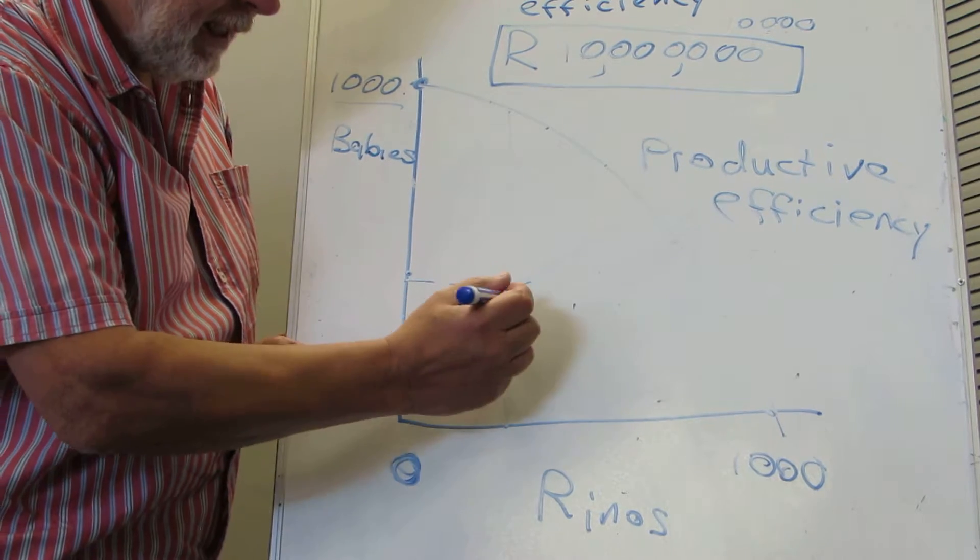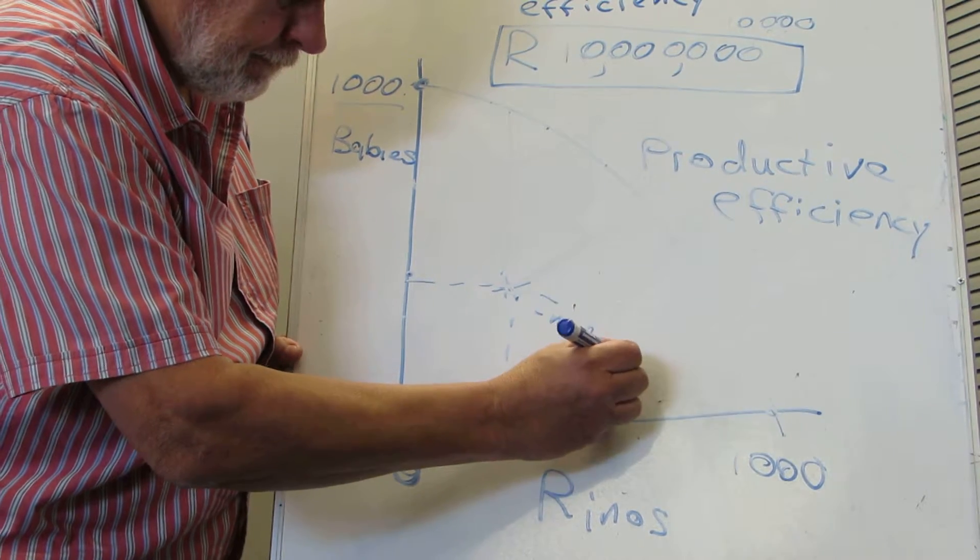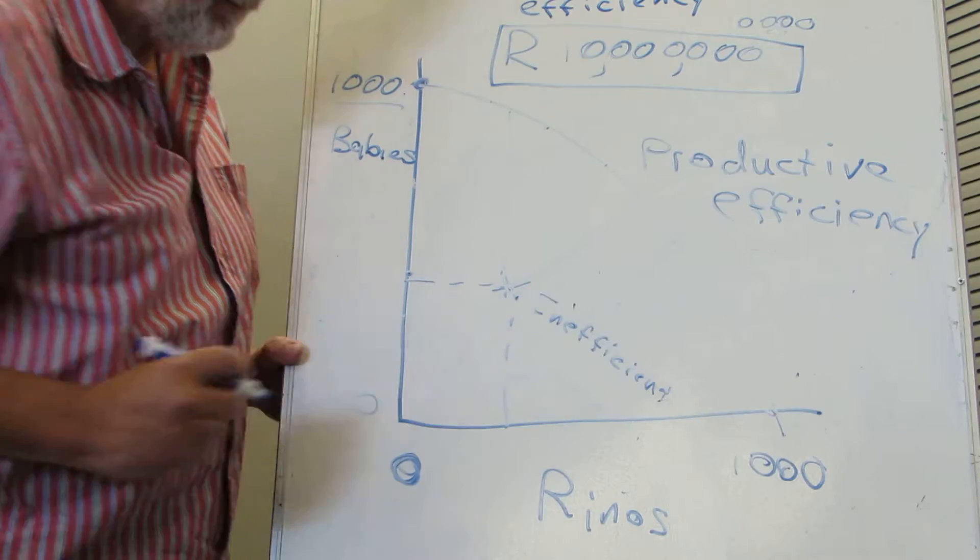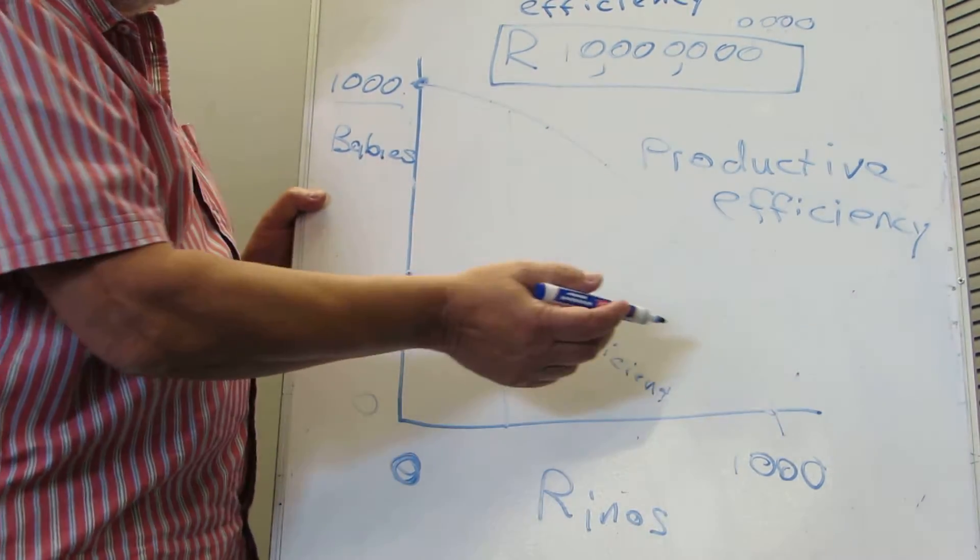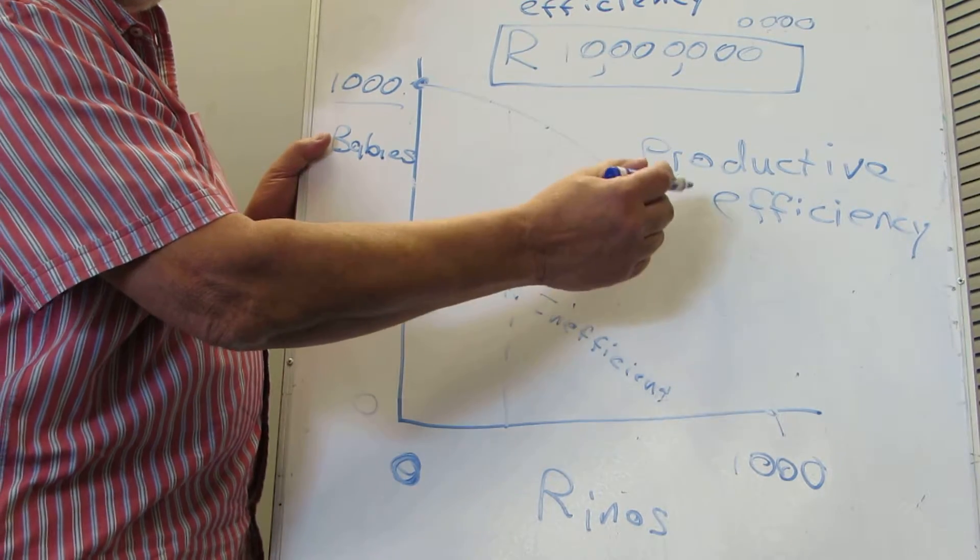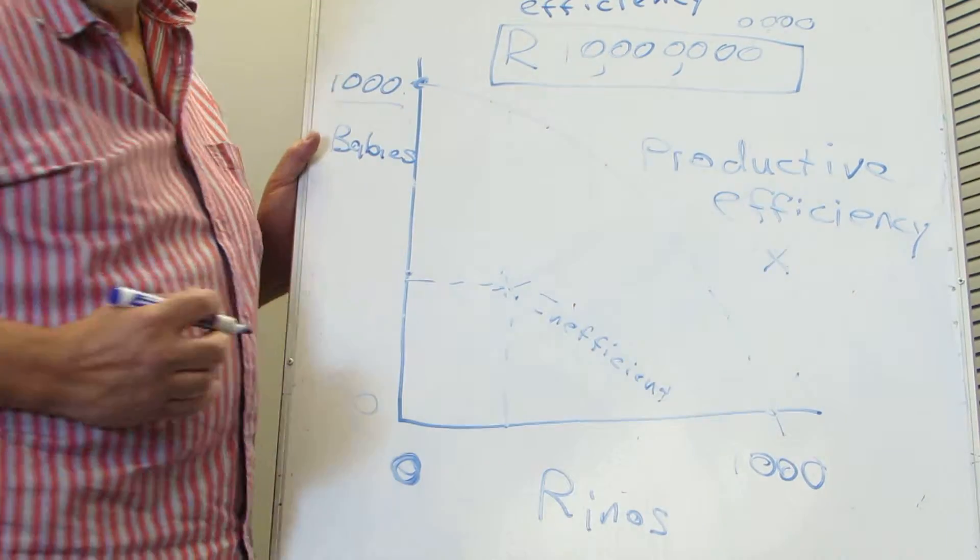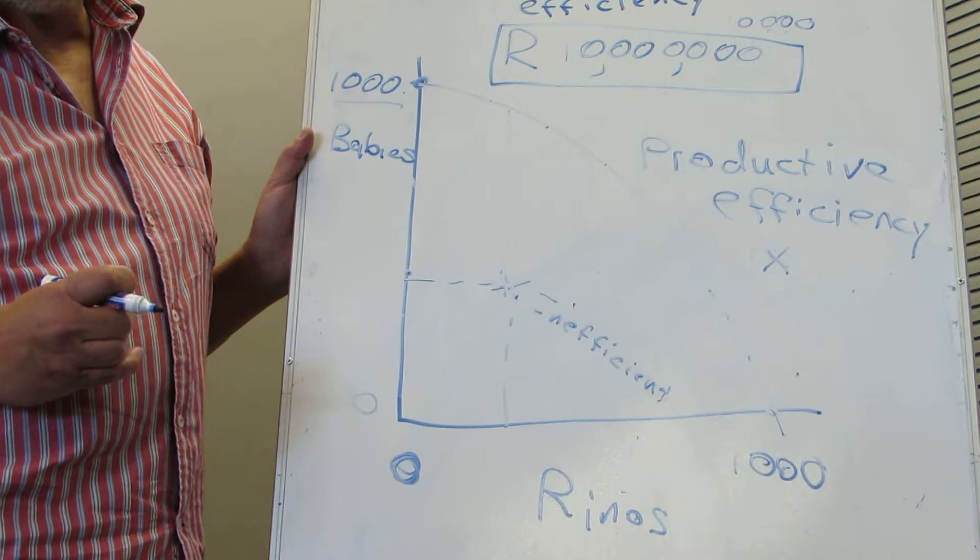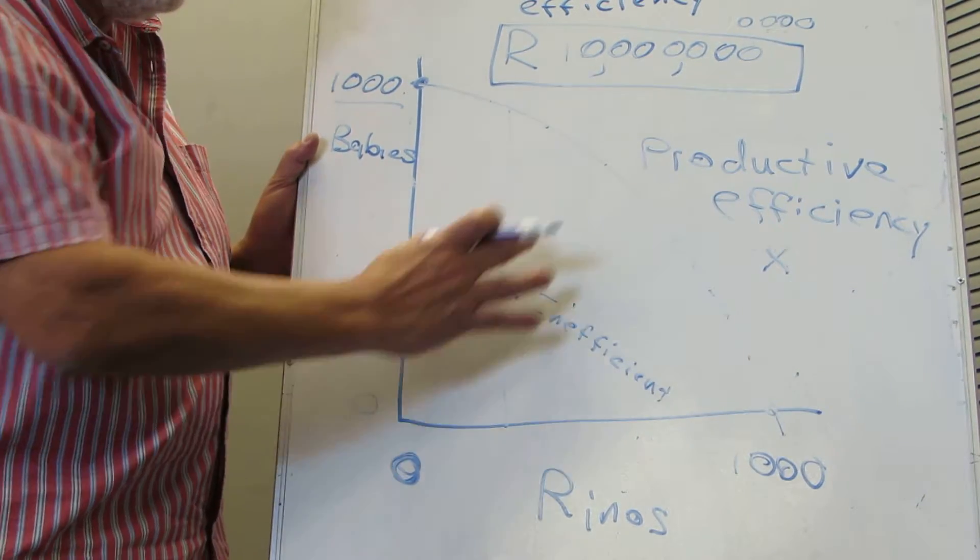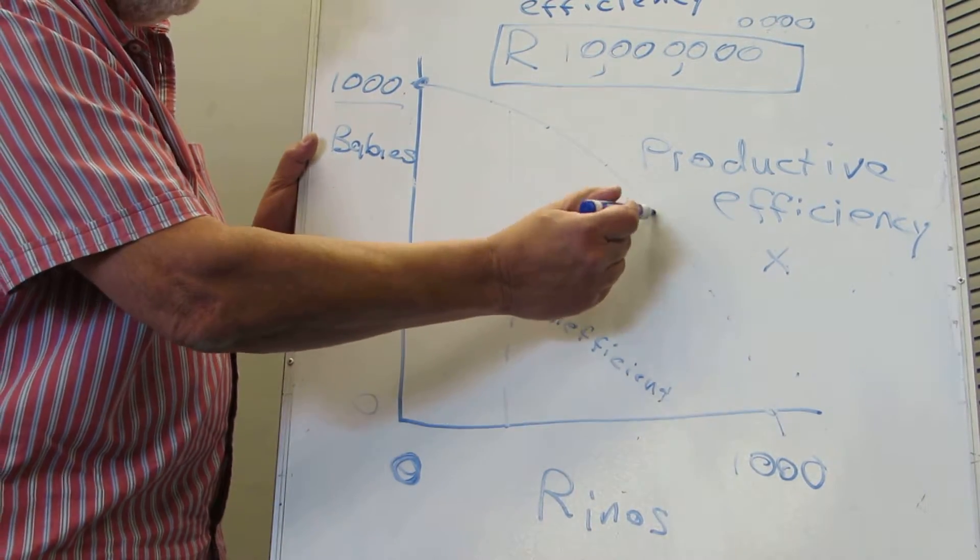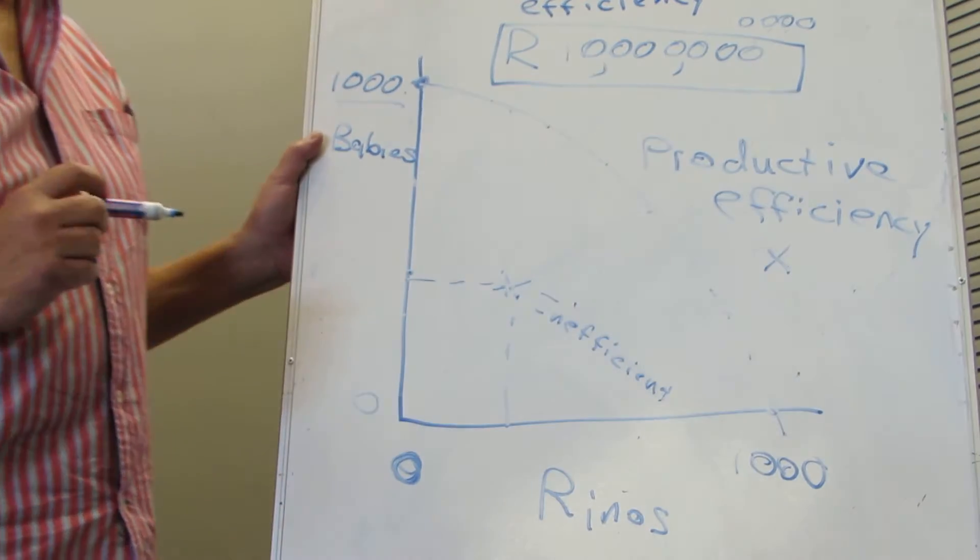So we call this point inefficient. And any point outside of this productive efficiency line, let's say this point over here, is what is called unattainable. So you can't attain that, because you've only got your sources to give you what lies within the PPF.